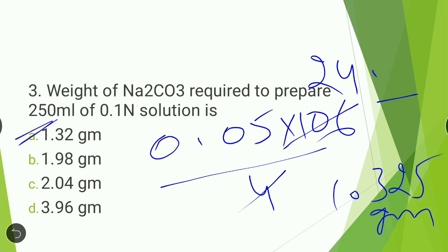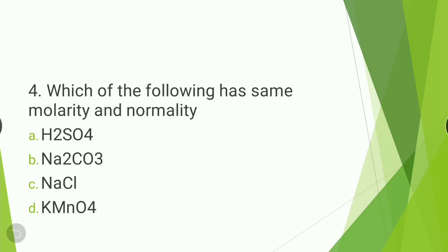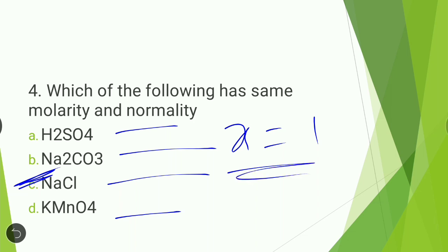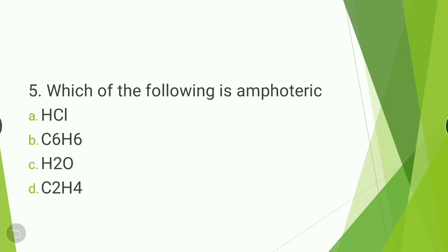Next question: which of the following has the same molarity and normality — H2SO4, Na2CO3, NaCl, or KMnO4? The answer is NaCl. Molarity and normality are the same when the X factor equals 1, and the X factor for NaCl is 1.